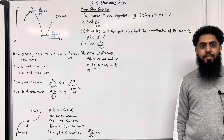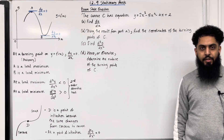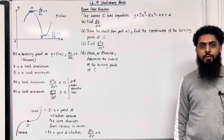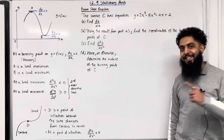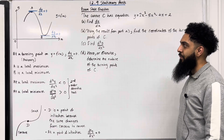Welcome back. In this teaching video, I'm looking at 12.9 stationary points. 12.9 represents Chapter 12, Section 9 of the Pearson A-Level Maths Pure Maths Year 1 Textbook. Let's have a look at the key facts of this section.